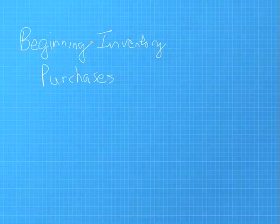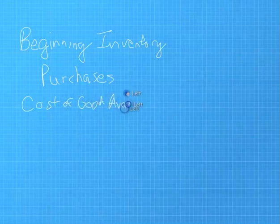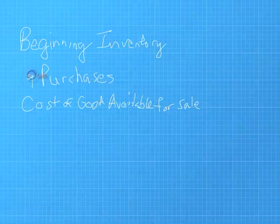When you add your beginning inventory and the purchases that you've made over that time period, it gives you a term that's called cost of goods available for sale. You add your purchases and you would get a final number of cost of goods available for sale.